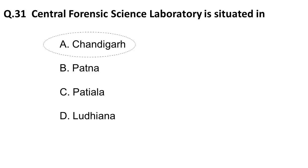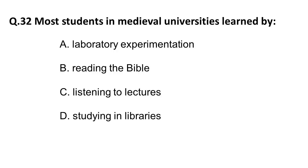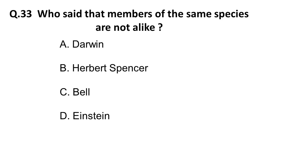The next question: most students in medieval universities learned by — option A is laboratory experimentation, option B is reading the Bible, option C is listening to lectures and studying in the library. In the medieval era, students learned by listening to lectures. That is the correct answer.